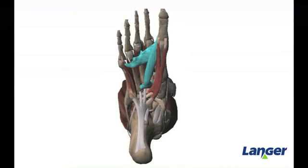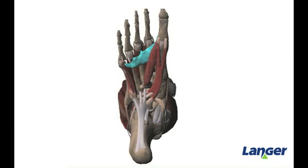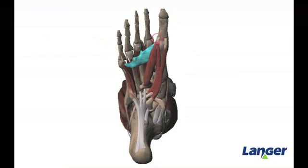The second muscle within the third layer is called the adductor hallucis. The adductor hallucis has both a transverse and oblique head. The transverse head runs horizontally along the foot and originates on the deep transverse metatarsal ligament, inserting at the base of the proximal phalanx.